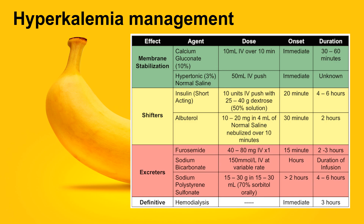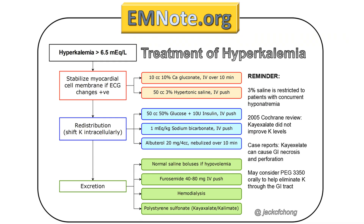Calcium should be given when there are ECG changes. The management of hyperkalemia can be summarized by the mnemonic C BIG K DROP, which stands for calcium, beta agonists, insulin, glucose, K-exalate, dialysis, and diuretics.